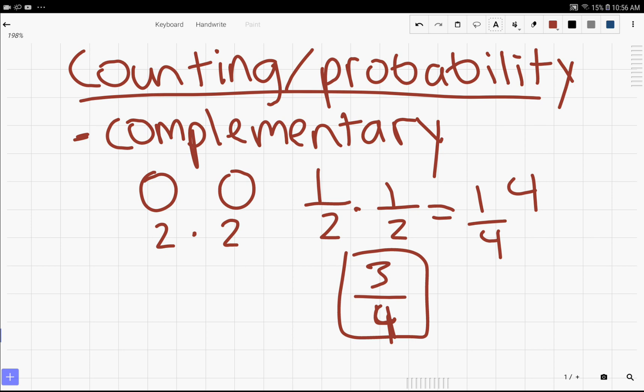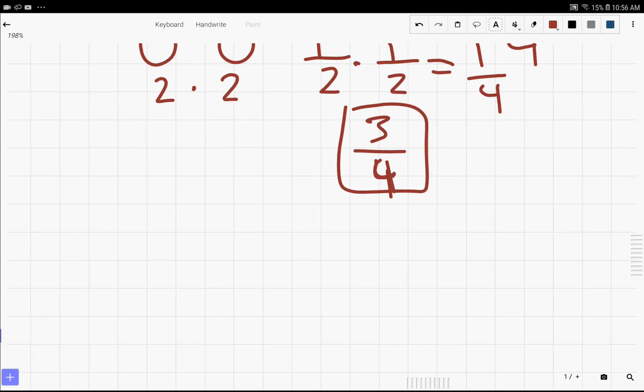The explanation may be kind of complicated, but this gives you a brief idea of what complementary counting can do and what problems you should use them on. Practicing counting and probability problems will help get you a feel for when to use different types of methods. The next method is casework.